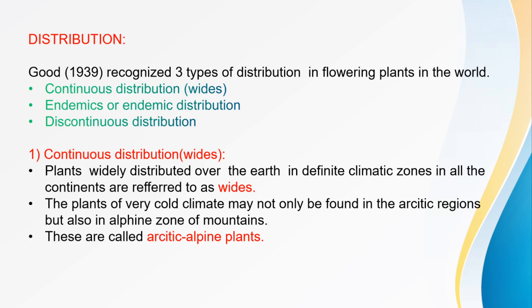In 1939, he recognized three types of distribution in flowering plants in the world: continuous distribution, endemic or endemic distribution, and discontinuous distribution. The first type is continuous distribution, where plants are widely distributed over the earth across different climatic zones in all the continents.